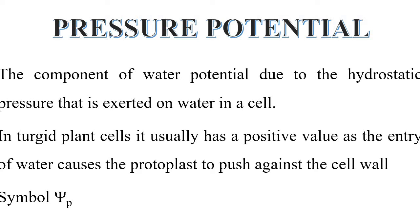Next topic is pressure potential. It is a component of water potential and is because of hydrostatic pressure. The water present inside the plant cell creates pressure on the walls of the cell. This is called pressure potential — the ability of a cell to maintain its shape and structure. Turgid cells are cells that are fully filled with water; their pressure potential value is positive. As solutes increase inside the plant cell, the pressure potential value becomes increasingly negative. It is symbolized as ψp.